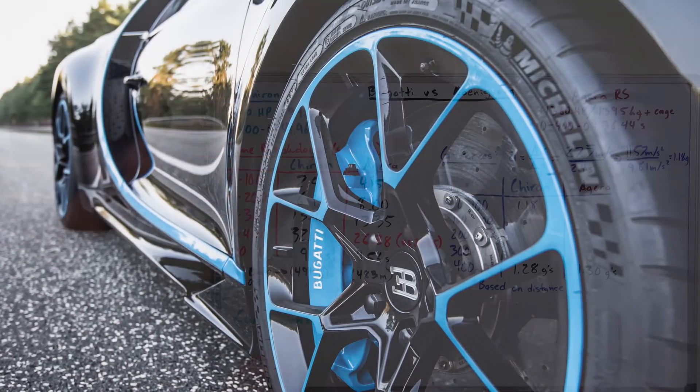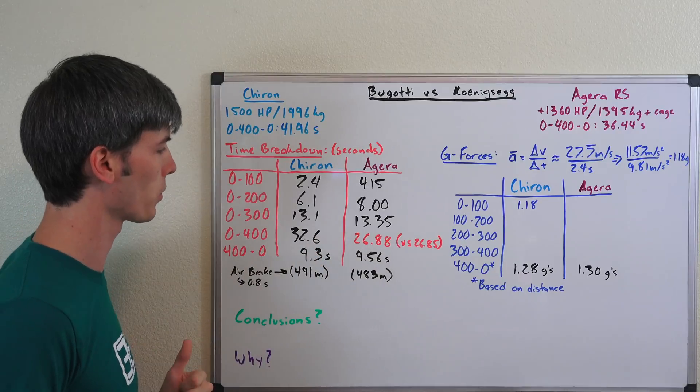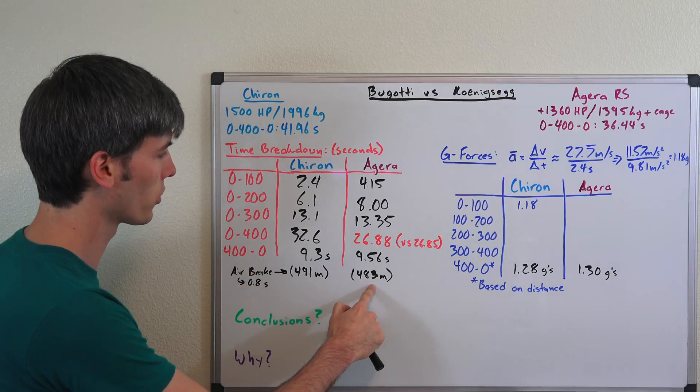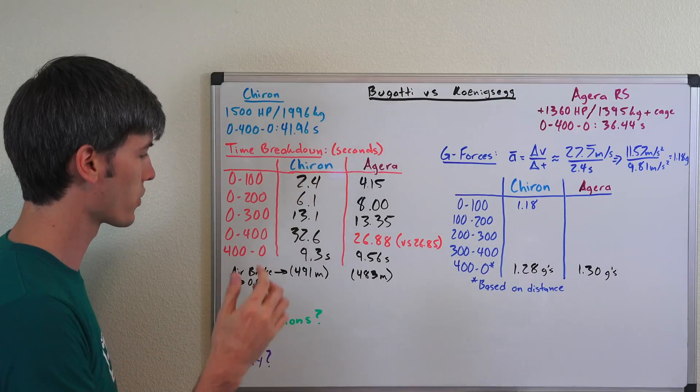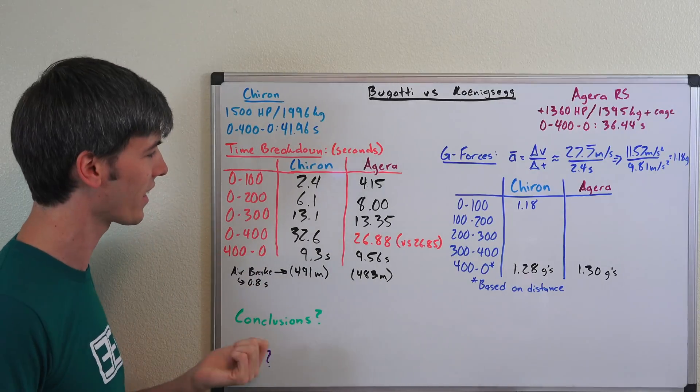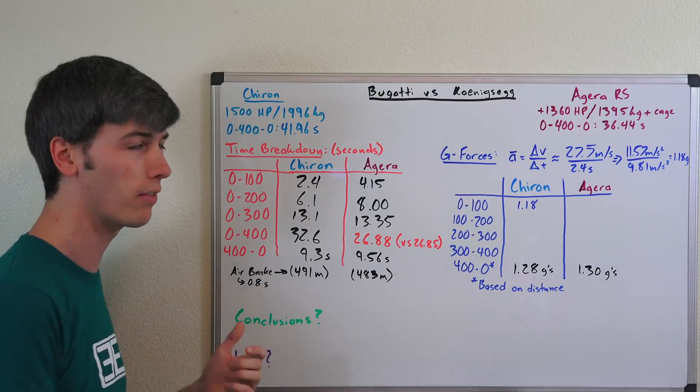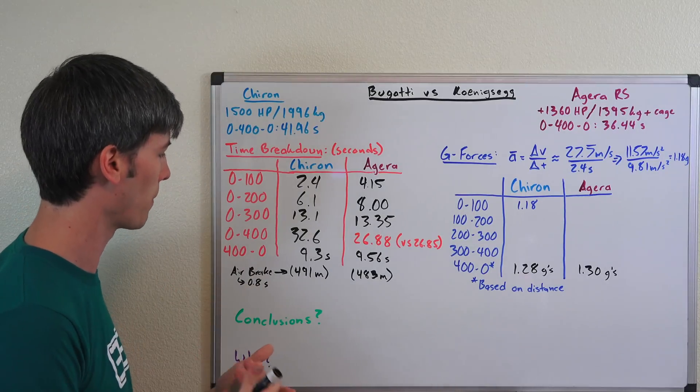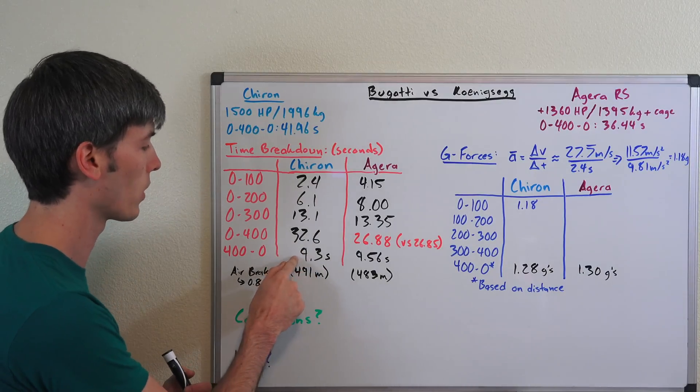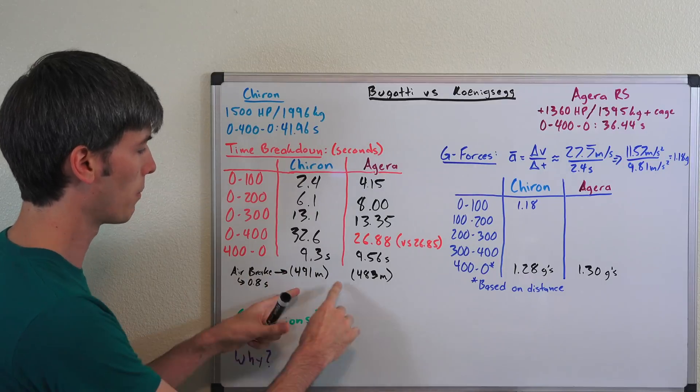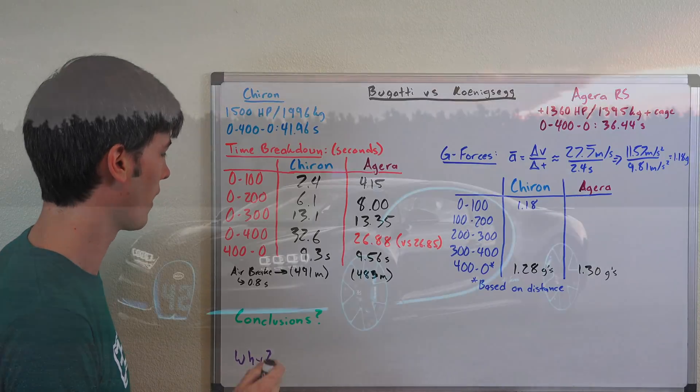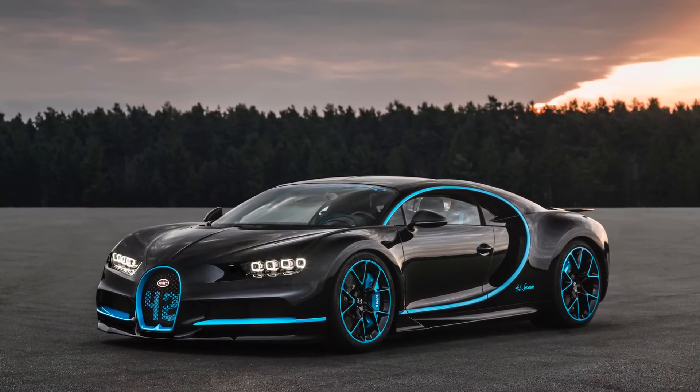Now as far as braking something interesting happened. Bugatti actually stopped in less time, 9.3 seconds versus 9.56. However, they did it in a longer distance, 483 meters for the Koenigsegg versus 491 for the Bugatti. Basically why I think this happened is Bugatti has an air brake that deploys but it takes 0.8 seconds for that air brake to deploy. So that's a lot of time where it's traveling at a very fast speed and not decelerating at its max decel rate. Once that's deployed its deceleration rate improves. It's able to stop very quickly, but a lot of distance has already been covered. But ultimately they're pretty equal in braking, off by less than 10 meters from 400 kilometers per hour to 0.